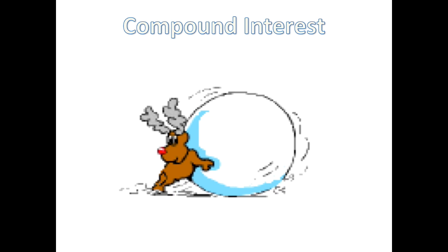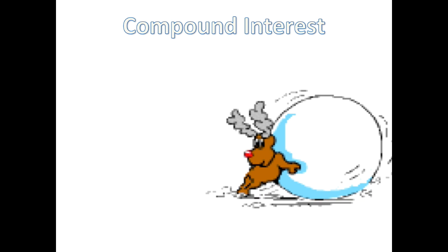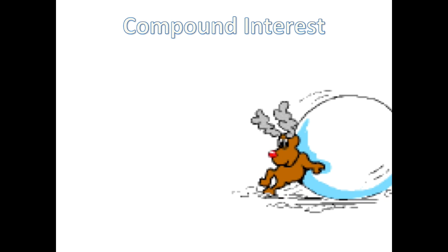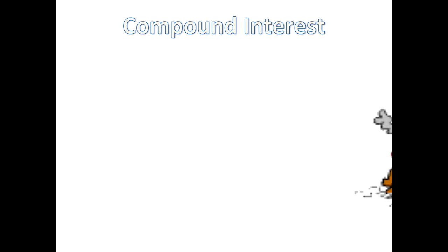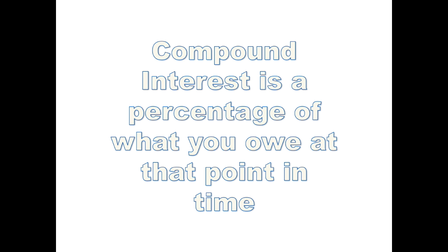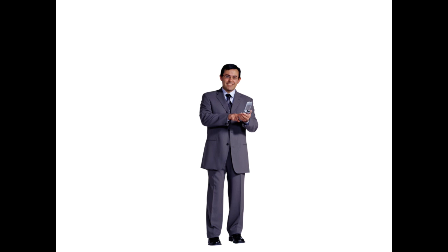Compound interest — like a snowball, it just keeps getting bigger and bigger. Compound interest is a percentage of what you owe at that point in time. Let's take this guy for example. He has a compound interest deal. His interest rate is 10%, the time that has passed is a year or years, and he owes $10,000.